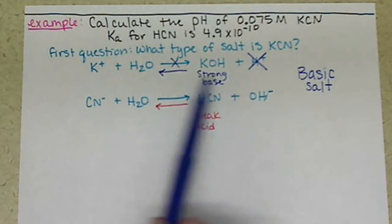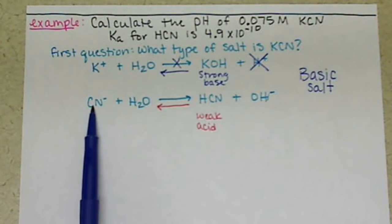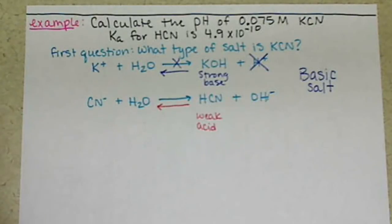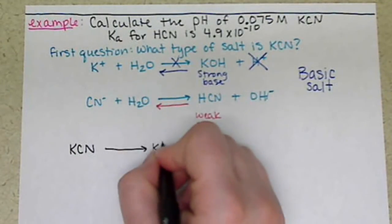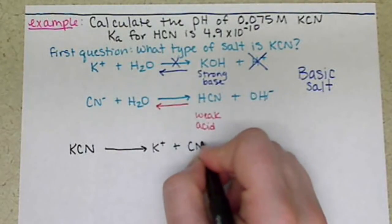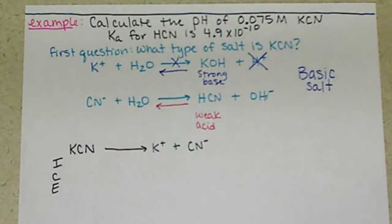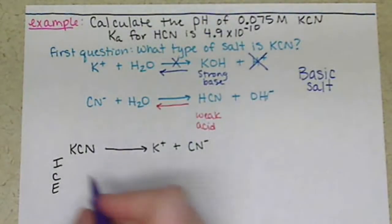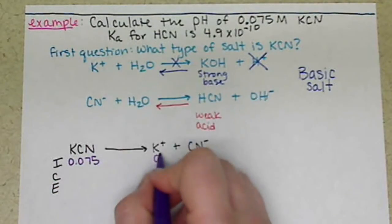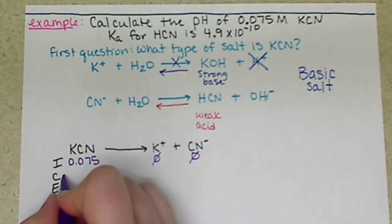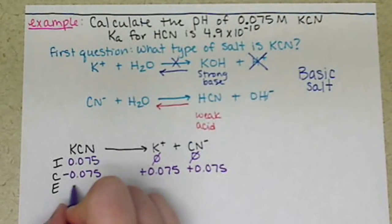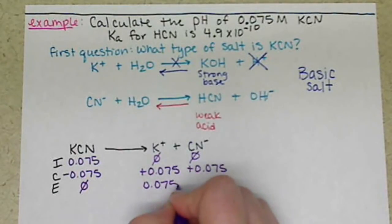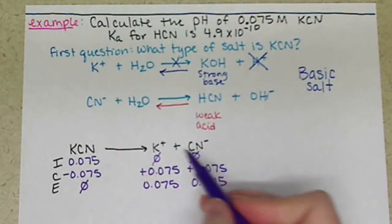This is the equilibrium we're looking at for our ICE table, and we need to figure out how much CN- is actually in our solution. If we look at KCN that we're starting with, when it splits apart, it is a strong electrolyte so it splits completely apart. So we have 0.075 molar to start with, none of our ions. All of it will dissociate, leaving no KCN and 0.075 molar of each of our ions.